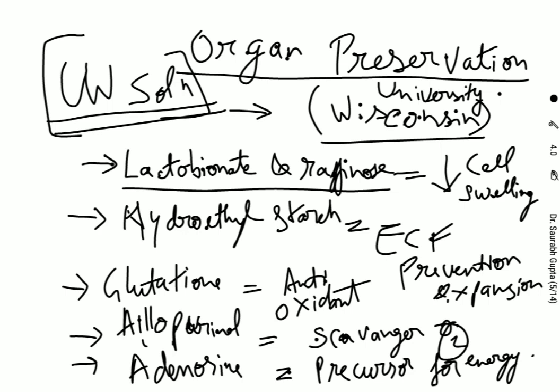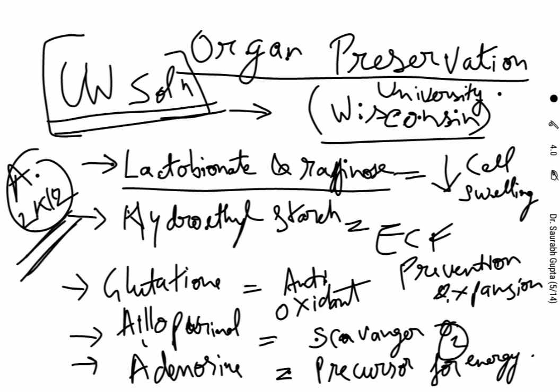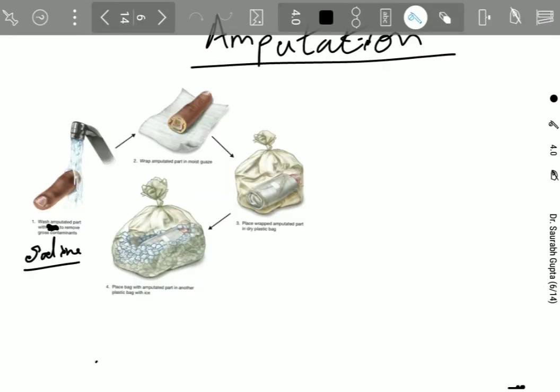An article from around 2012 described a recent trial where a solution was used to wash off the antigens present on the surface of the donor organs, so that once transplanted into the recipient there would be no rejection of the graft. This approach was still in the trial phase and not yet in routine use, but the solution was able to dissolve all the surface antigens of the organs, reducing the chances of rejection.